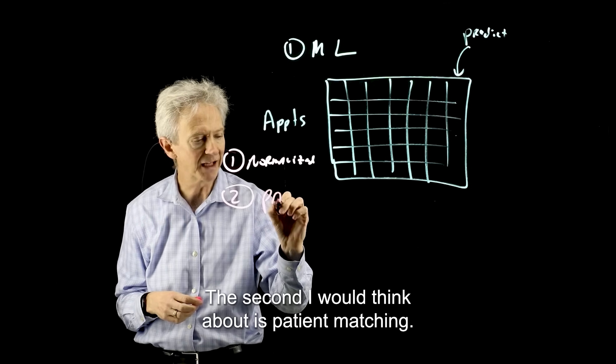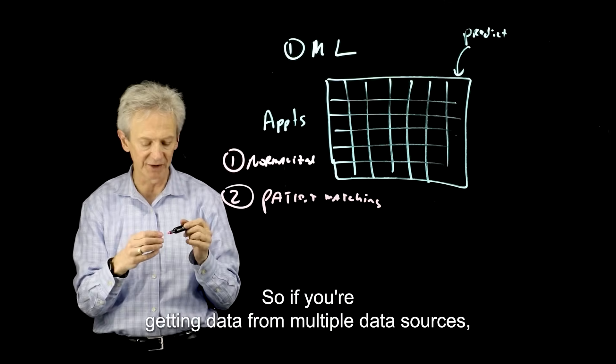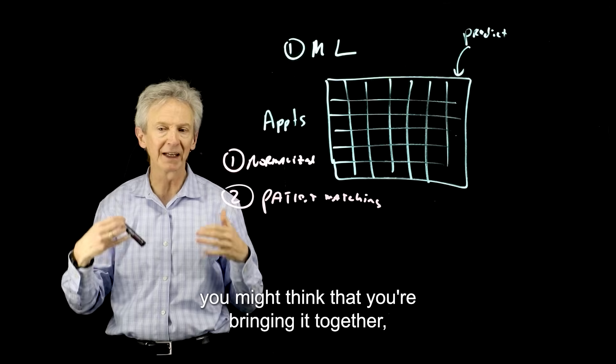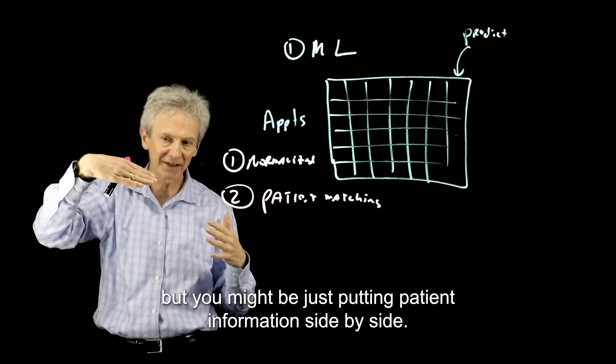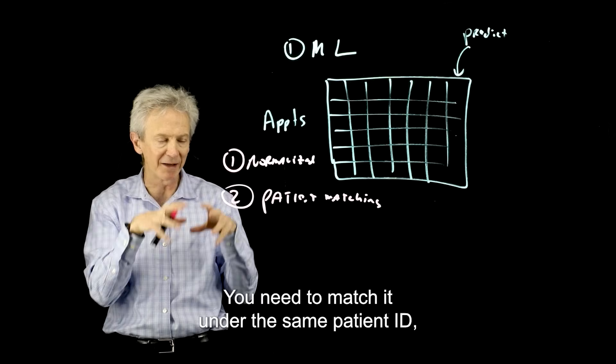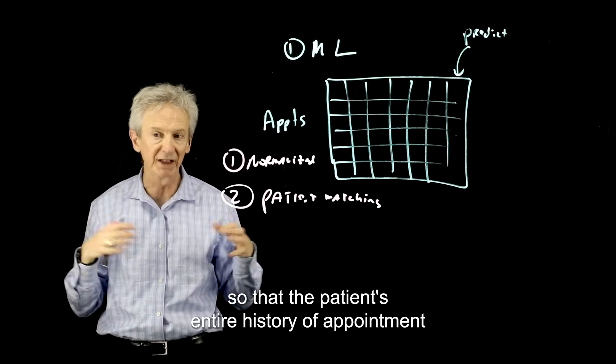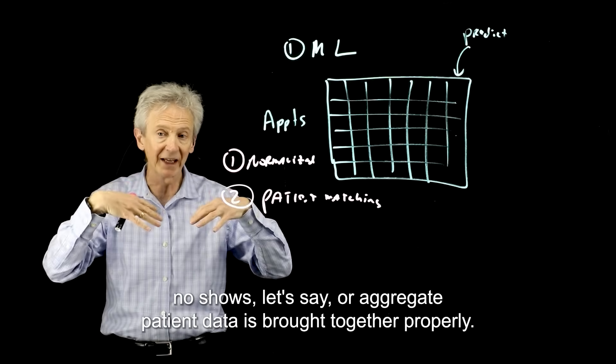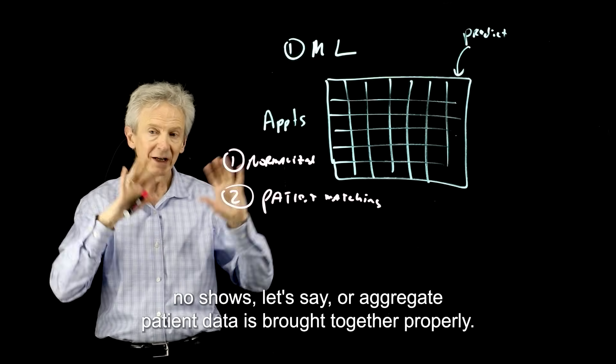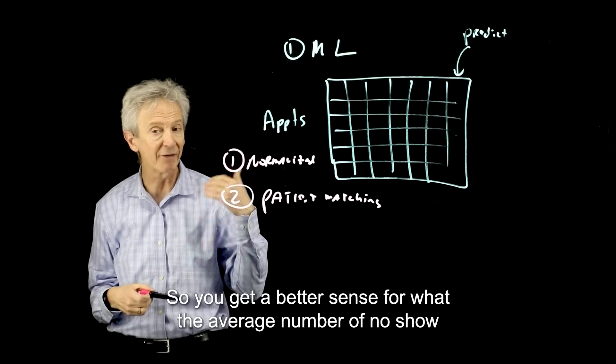The second I would think about is patient matching. So if you're getting data from multiple data sources, you might think that you're bringing it together, but you might be just putting patient information side by side. You need to match it under the same patient ID so that the patient's entire history of appointment no-shows, let's say, or aggregate patient data is brought together properly.